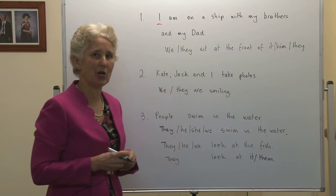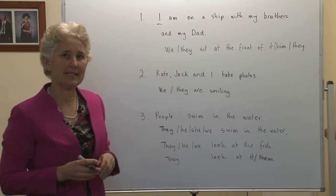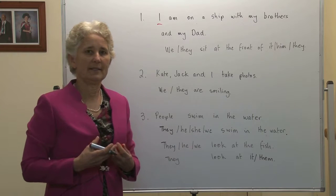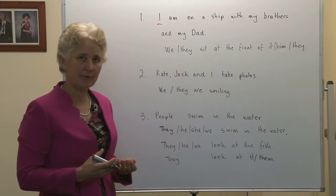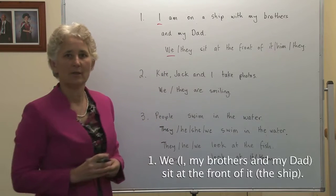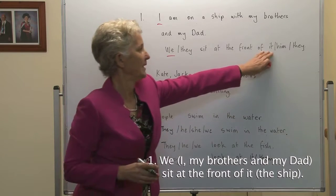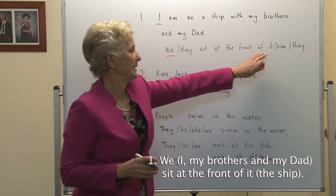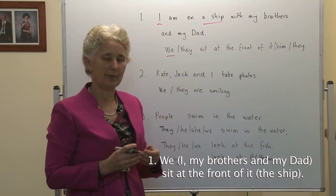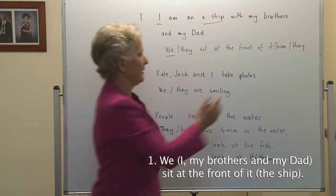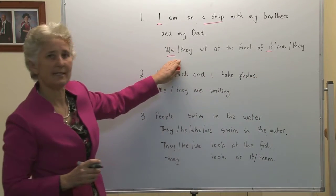Notice the I is the first person pronoun, singular — it is only one person. But when she is referring to herself, my brothers and my dad, this is a plural. It is a group of people. Pearl is including herself in the group of people, so we need we. We sit at the front of it or they. This is replacing the ship. The ship is the object — we need a pronoun thing, singular. There's only one ship, so we sit at the front of it.